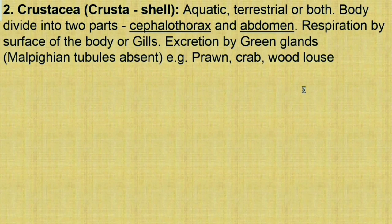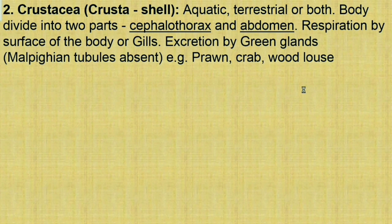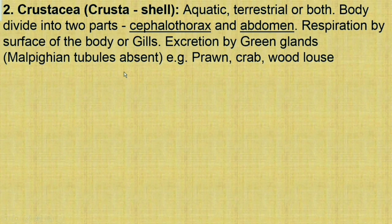The second class is Crustacea. Crustacea means 'shell,' so these animals possess a shell. They are aquatic, terrestrial, or both. The body is divided into two parts: cephalothorax and abdomen. Respiration occurs by the surface of the body or by gills. Excretion is by green glands, because Malpighian tubules are absent. Examples include prawn, crab, and wood louse.